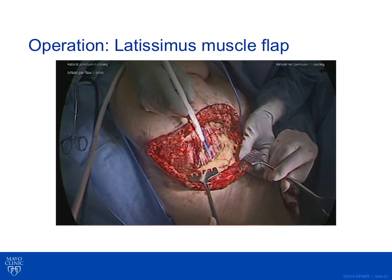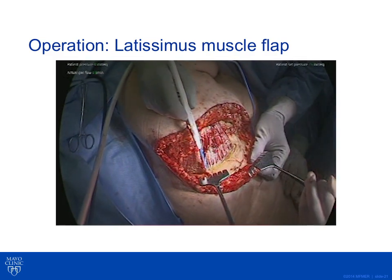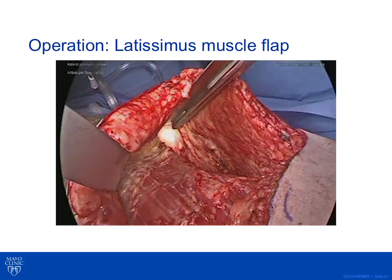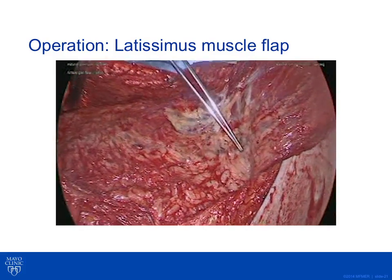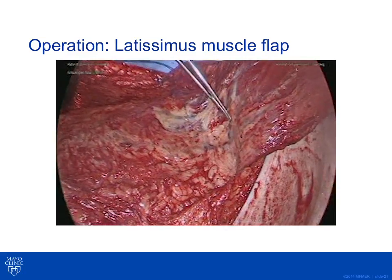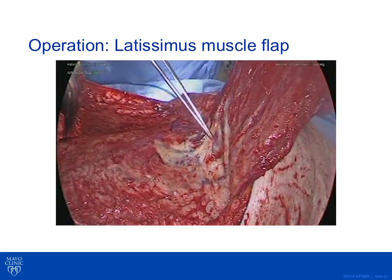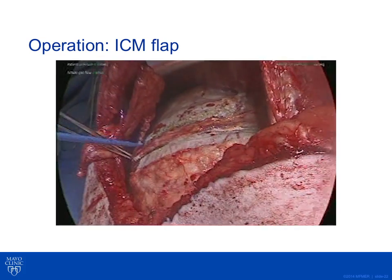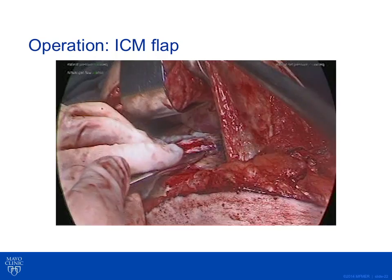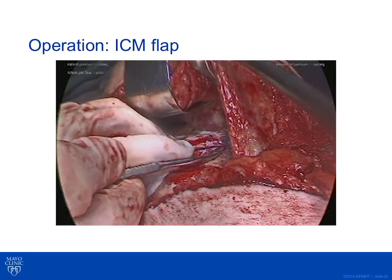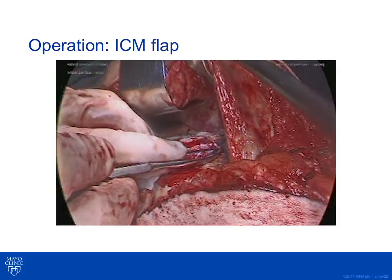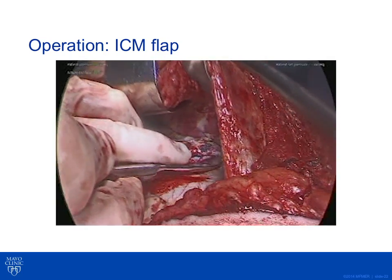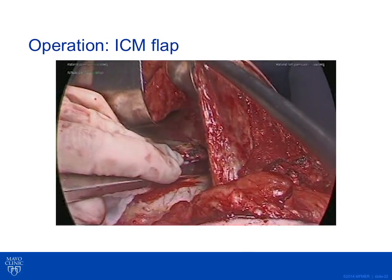A right posterolateral thoracotomy approach was utilized during surgery. The operation began with dissection of a latissimus muscle flap using bovie electrocautery to dissect out the entire latissimus muscle, keeping it based off a superior anterior pedicle, with the vascular blood supply clearly identified. We then performed an intercostal muscle flap harvest, carefully using a Madsen periosteal rib elevator to separate the nerve, artery, and vein from the undersurface of the rib using a scraping maneuver, then used bovie electrocautery to truncate the muscle.